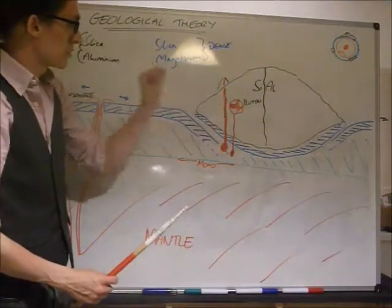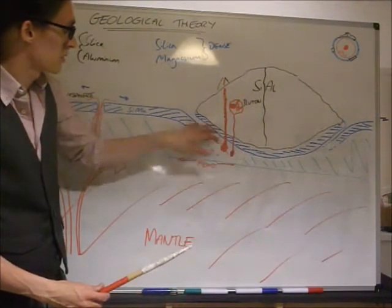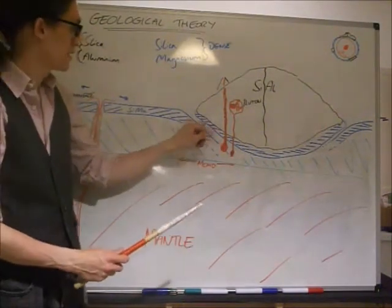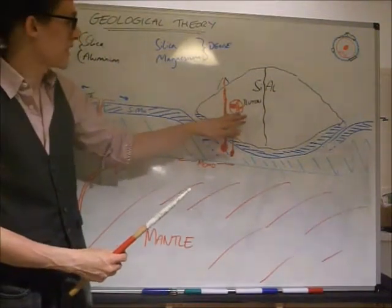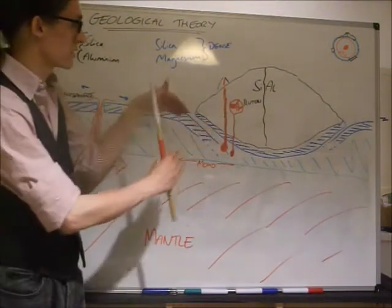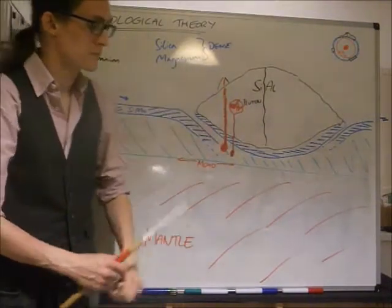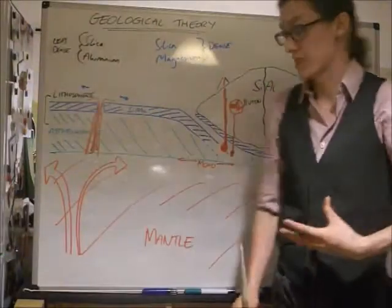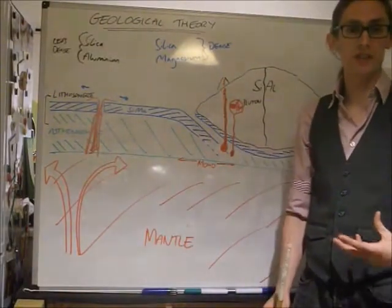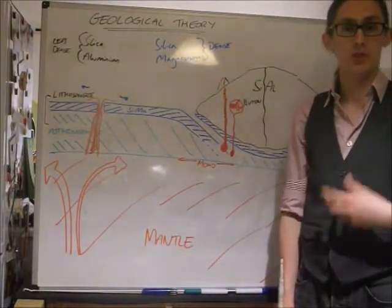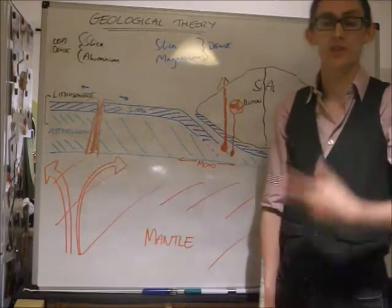And magma is created at subduction zones, from the heat of the Saima oceanic plate, and the mainly Saial continental plate, grinding past each other, and releasing magma. Now this is the basic theory. I'm going to be referring back to these ideas and these terms shortly, as we go through intrusive, extrusive, and seismic features.